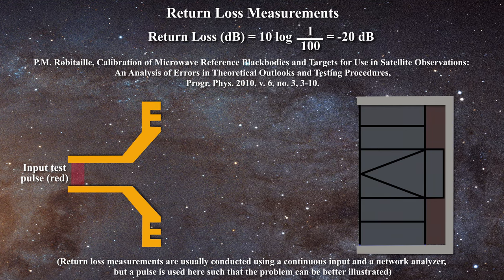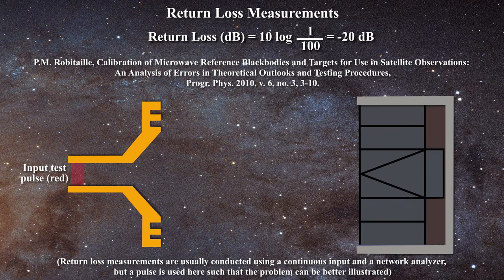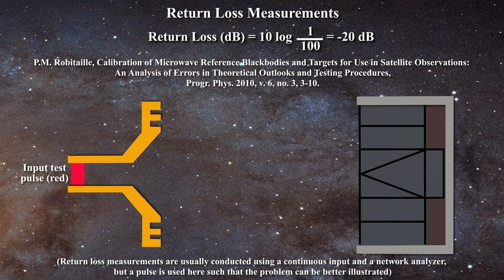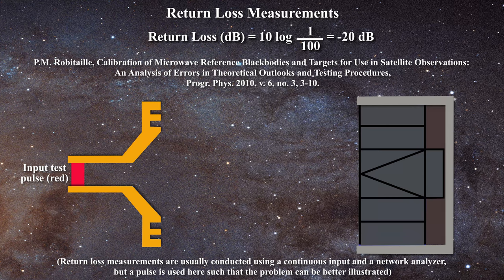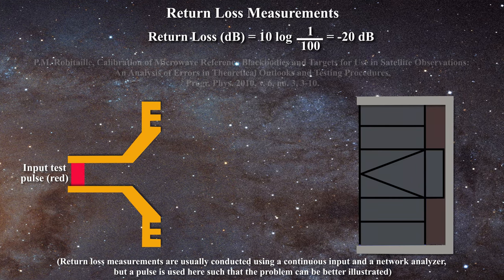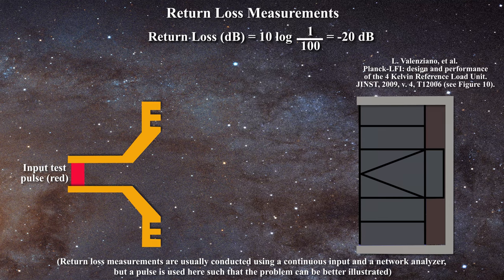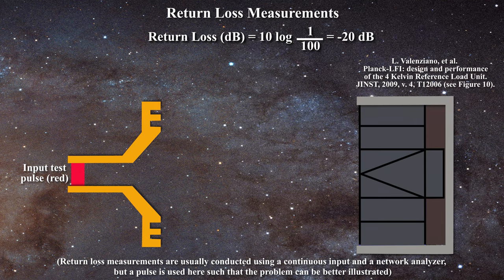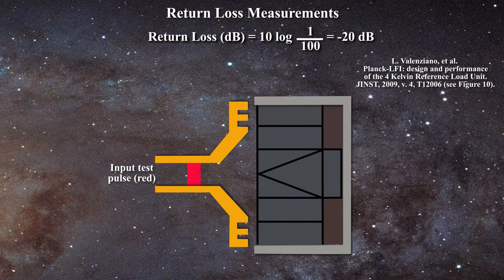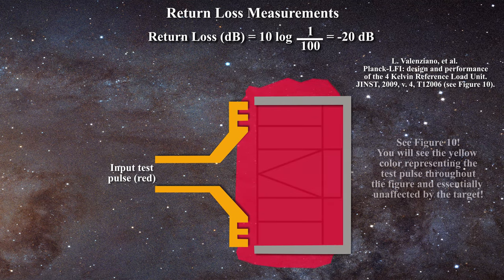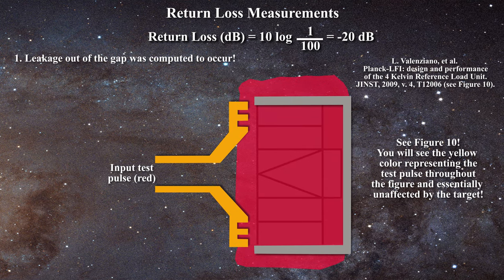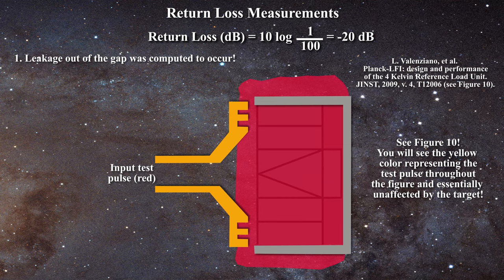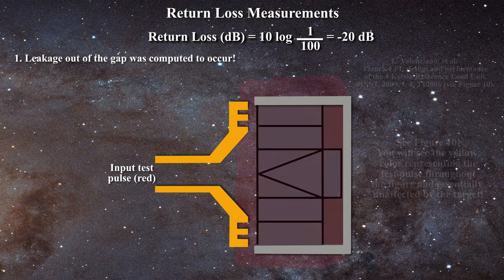Just because a signal has not been returned to the detector does not mean that it was all absorbed on first pass. For instance, some of the signal might just leak around the target and never return to the detector. In fact, this is exactly what the calculations of the Planck team itself demonstrates as shown in Figure 10 of this paper. Recall the 1.5 mm gap between the horn and the target? Let us adjust our geometry to meet this condition. Incident signal can simply spill out from the gap and this was computed to occur. As a result, even if the Planck team claims that they met the requirements for a minus 20 dB return loss, it is clear that leakage is affecting this number significantly.